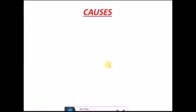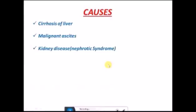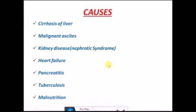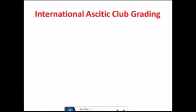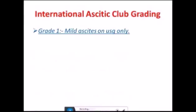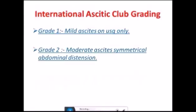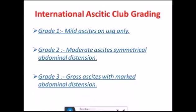You should know the causes of ascites: cirrhosis of the liver, malignant ascites, kidney disease like nephrotic syndrome, heart failure, pancreatitis, tuberculosis, and malnutrition. The International Ascitic Club grading classifies ascites as Grade 1 — mild, detectable on ultrasound only; Grade 2 — moderate with symmetrical abdominal distension; Grade 3 — gross ascites with marked abdominal distension.